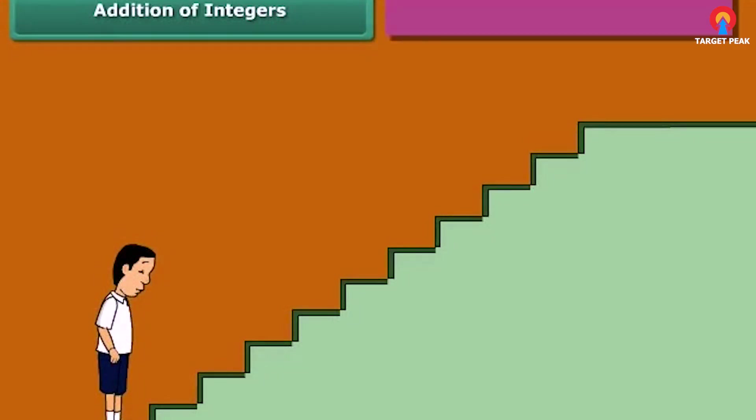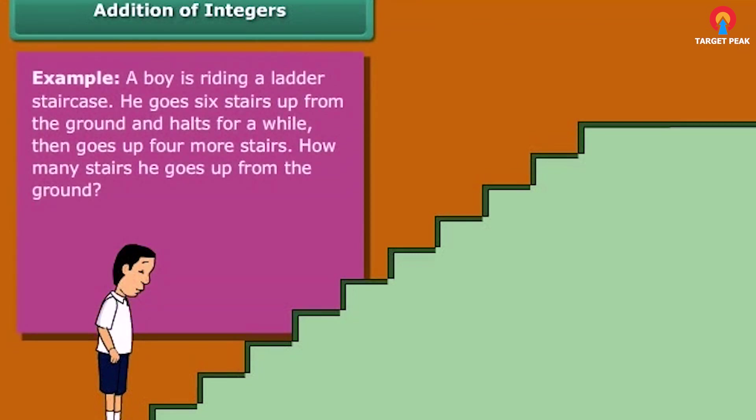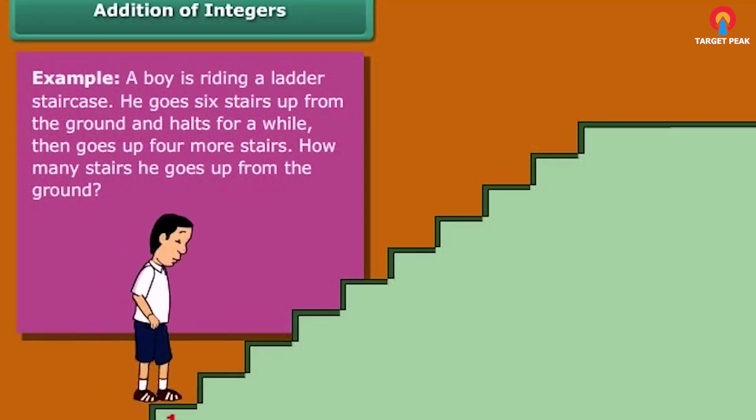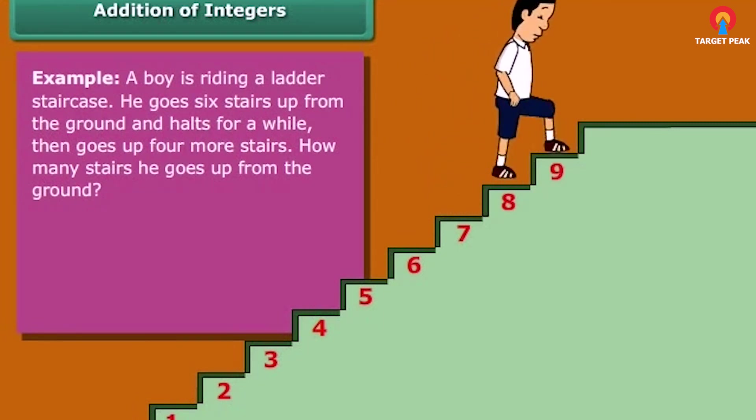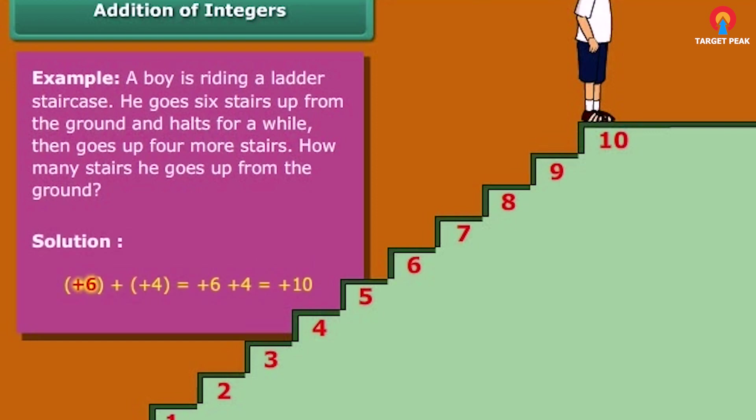Addition of two positive numbers. Example: A boy is riding a ladder staircase. He goes six stairs up from the ground and holds for a while, then goes up four more stairs. How many stairs he goes up from the ground? Plus six plus four equals plus ten.